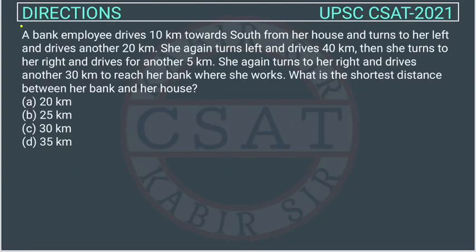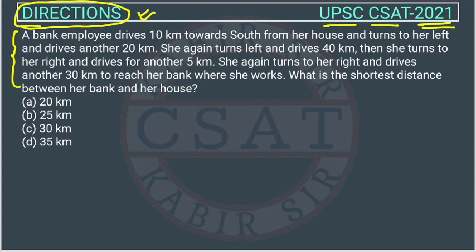This is a question of reasoning taken from the chapter on directions, asked by UPSC in their CSED paper of 2021. This is a 5-line question, so in the exam it will look like a 10-line question and seems very lengthy. But direction questions are very easy to solve, so you can easily get marks — never try to leave these questions.